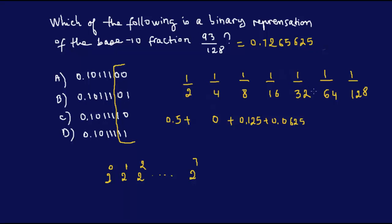One thirty two is point 03125. Now I'm adding. So this whole thing is equal to, it's got to be less than 0.72. So let's just put it in the calculator. 0.5 plus 0.125 plus 0.0625 plus 0.03125. This is equal to 0.71875.